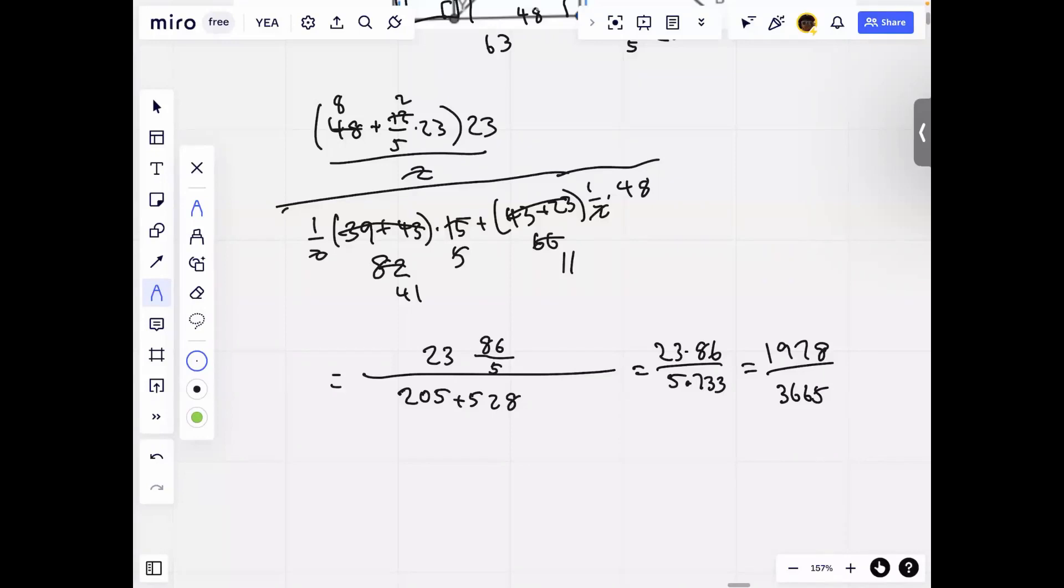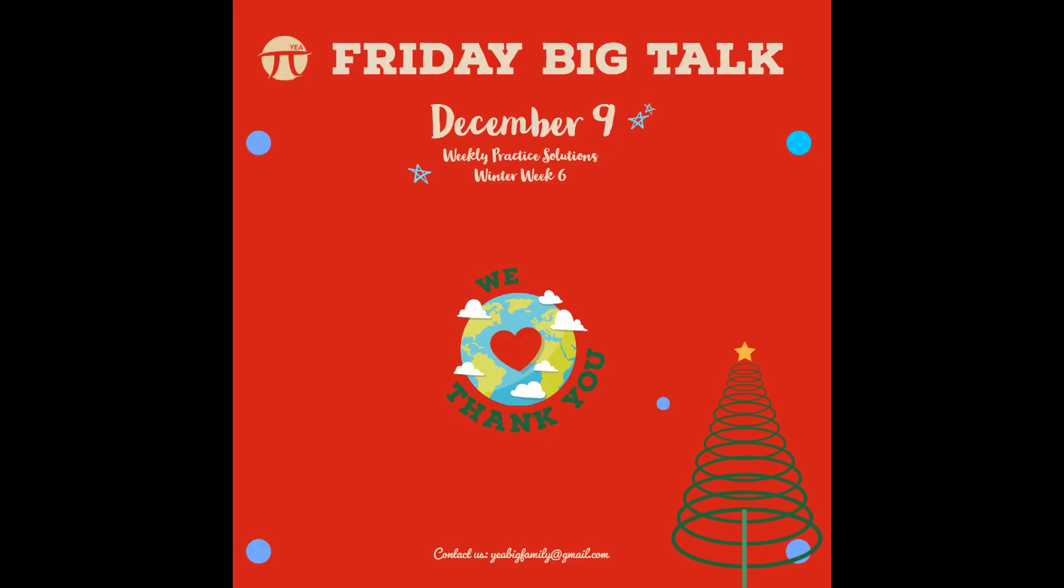So now we just need to simplify this. After simplifying it, then we get 1978 over 3665. This cannot be simplified, so this is our answer. I'll have to go first. Thank you.